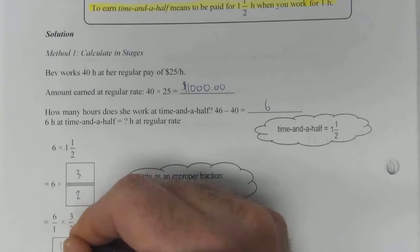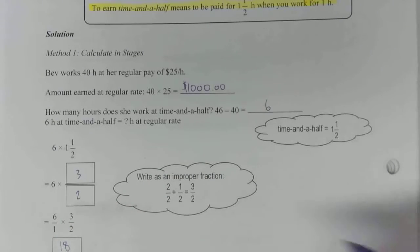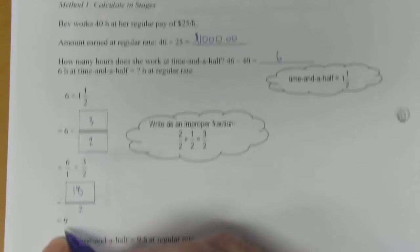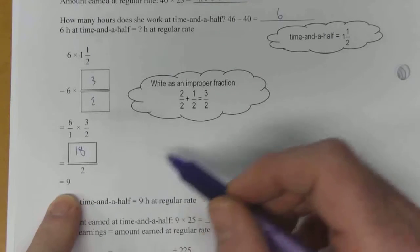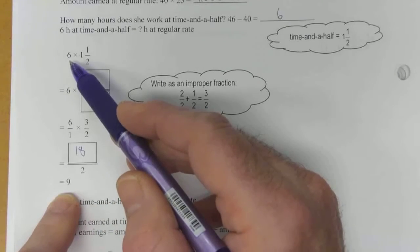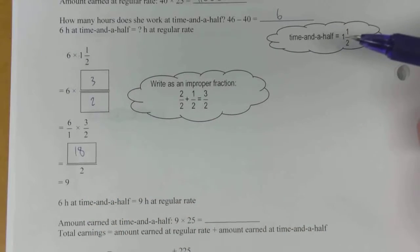Six times three is 18, and one times two is two. So when you reduce that down to lowest terms, it becomes nine. So she's actually getting paid for nine hours when she only works that extra six. She's getting three bonus hours of pay, which is pretty sweet.